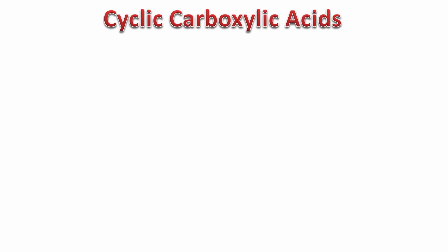Hello and welcome to IUPAC nomenclature of cyclic carboxylic acids. In this video, we are going to look at various types of cyclic carboxylic acids. We have already seen that carboxylic acid groups have the functional group COOH. We are going to talk about various situations: the COOH group attached directly to the ring, attached indirectly to a ring, and having two rings attached to each other with this group — all permutations and combinations.